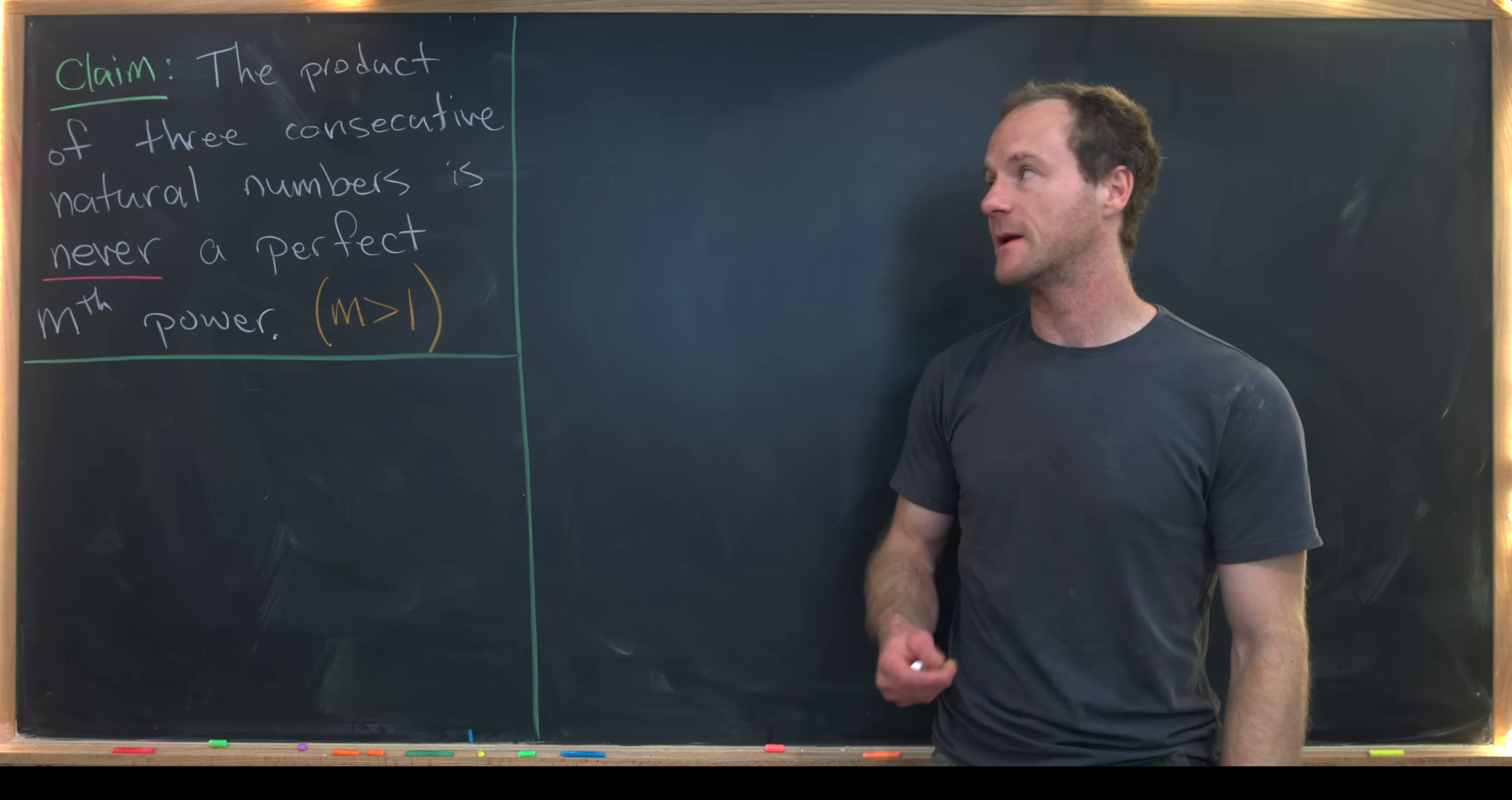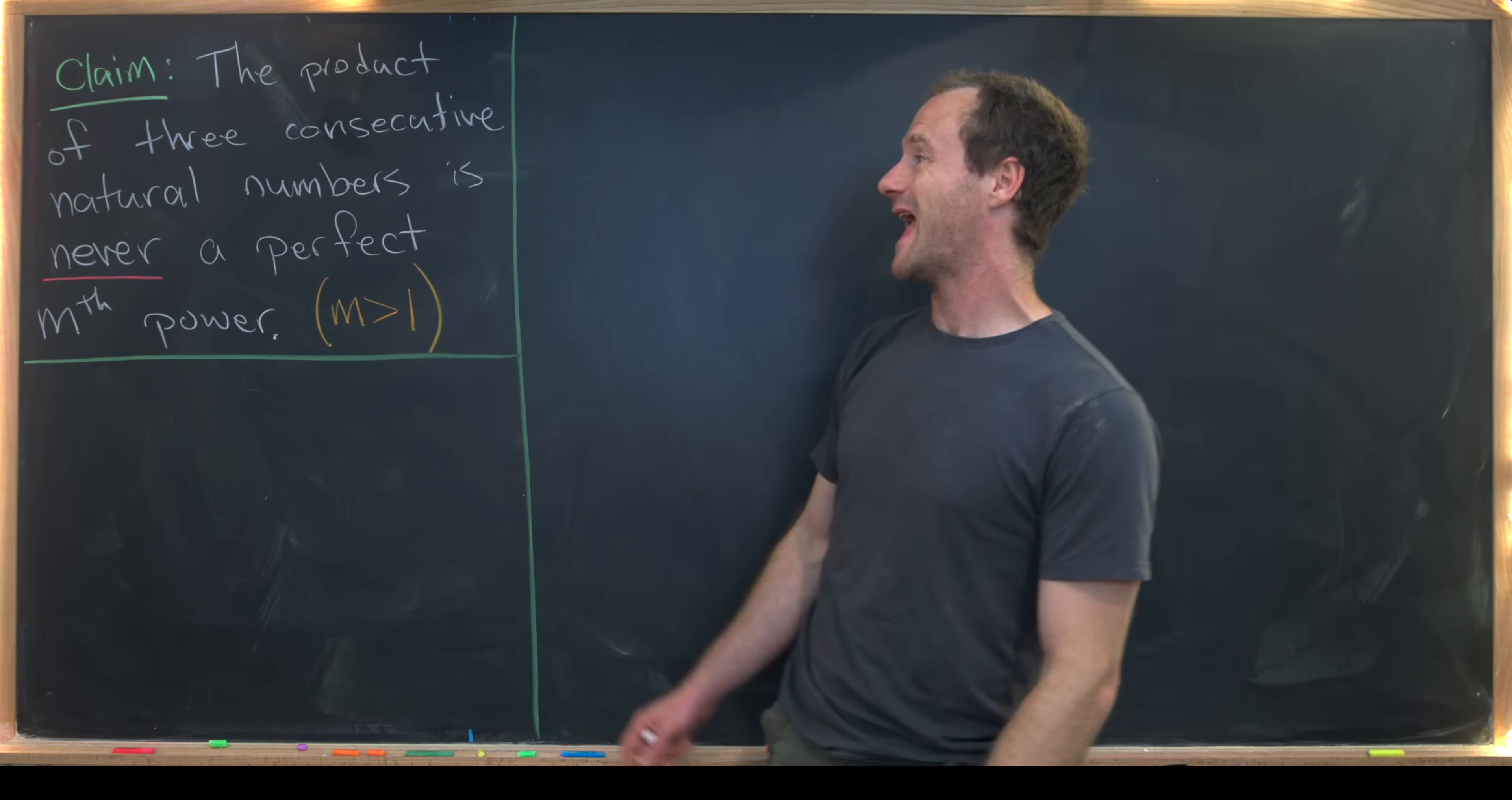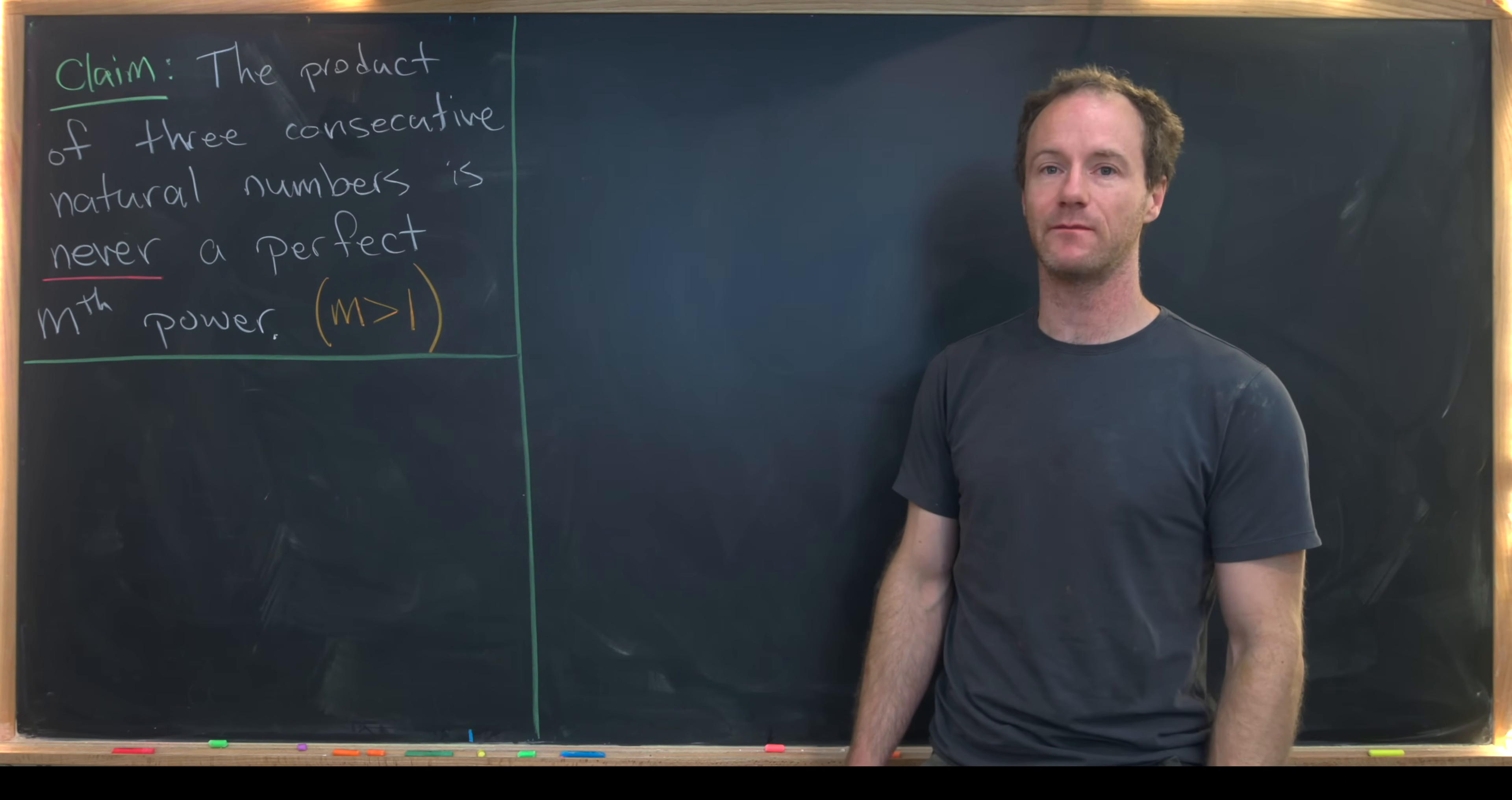I've got a quick little number theory problem today, and we're going to prove the following claim. The product of any three consecutive natural numbers is never a perfect nth power.